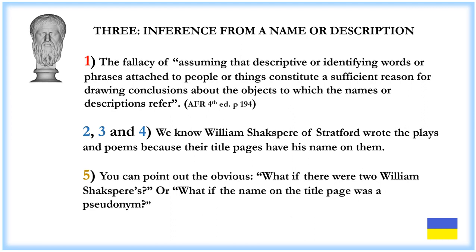Fallacy 3: Inference from a Name or Description — and this is a very common one. In fact, I think this is where the Stratford argument started. This is the fallacy of assuming that descriptive or identifying words or phrases attached to people or things constitute a sufficient reason for drawing conclusions about the objects to which the names or descriptions refer. The argument is: we know William Shakespeare of Stratford wrote the plays and poems. An effective counter is to point out: what if there were two William Shakspers, or what if the name on the title page was a pseudonym?